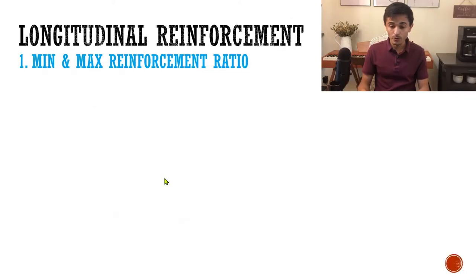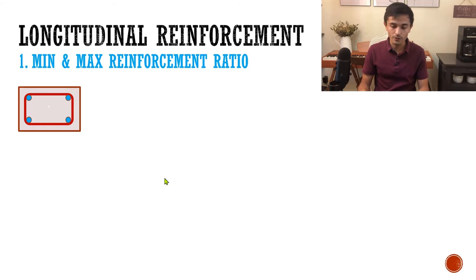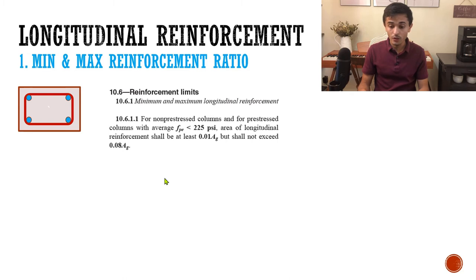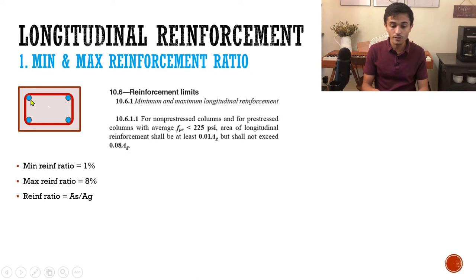The first set of rules are for the longitudinal reinforcement, and the code provides a minimum and maximum reinforcement ratio. If you have a cross-section of your column, the code states that your steel reinforcement for the longitudinal rebars needs to be between 1% and 8%. You're calculating the area of the steel longitudinal rebars, dividing by the gross area of your cross-section. If that ratio is between 0.01 and 0.08, you're good.